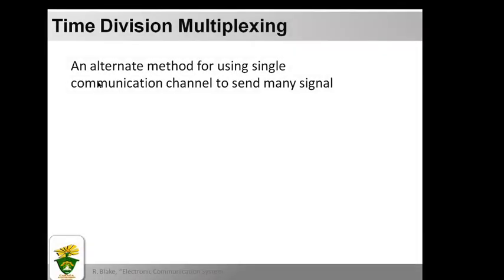An alternative method for using a single communication channel to send many signals is called time division multiplexing (TDM). Instead of dividing the available bandwidth among many signals, the entire bandwidth is used for each signal but only for a small part of the time. A non-electronic example is the division of available time on a television channel among various programs. TDM is used extensively especially with digital communication — the digital telephone system is a good example.